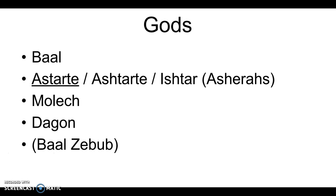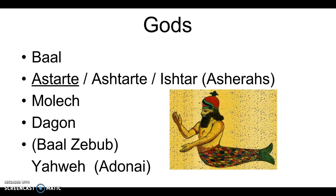Dagon is the Philistines' god. The Philistines had moved into Canaan from the sea and were probably Phoenician-related. Dagon was originally a sea god and later became their grain god. In some depictions he is shown as half man, half fish. If you do the extra credit assignment on Eli, there's an interesting thing that happens to the statue of Dagon — I have my own theory about what that is.